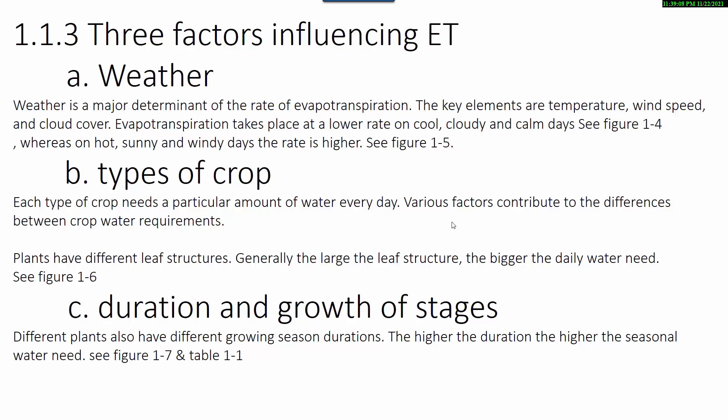Types of crop: Each type of crop needs a particular amount of water every day. Plants have different leaf structures. Generally, the larger the leaf structure, the bigger the daily water need. Different plants also have different growing season durations. The longer the duration, the higher the seasonal water need.